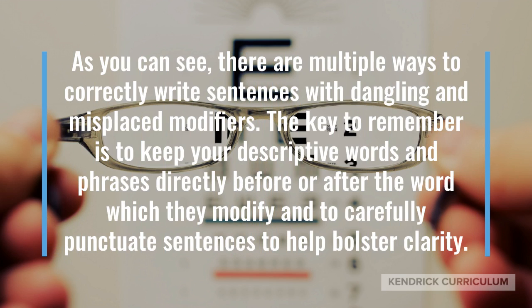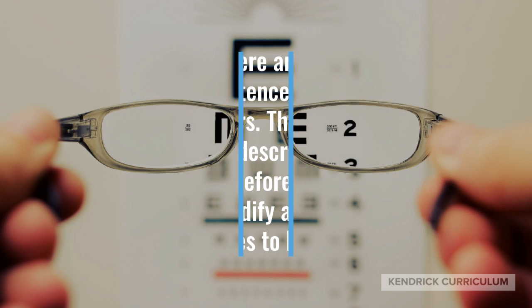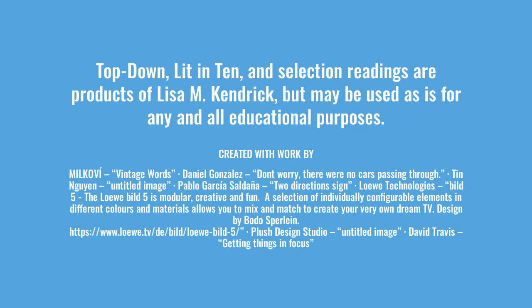As you can see, there are multiple ways to correctly write sentences with dangling and misplaced modifiers. The key to remember is to keep your descriptive words and phrases directly before or after the word which they modify, and to carefully punctuate sentences to help bolster clarity. For more information from GoCalSea, you don't want to miss it.